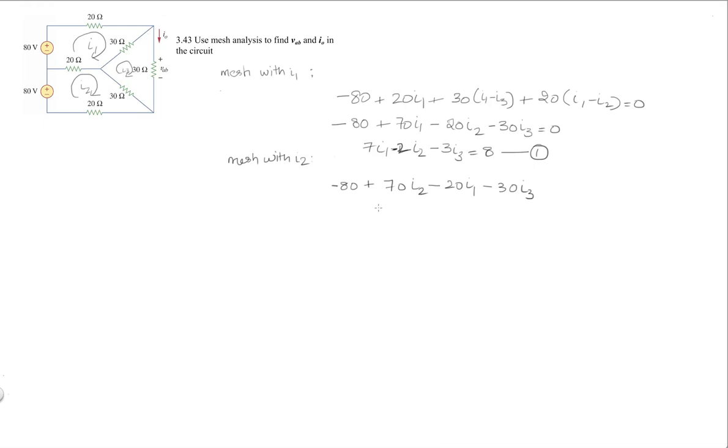So that again gives me a 7. So I'm going to write them in order: minus 2I1 plus 7I2 minus 3I3 equals 8. So this is my second equation.